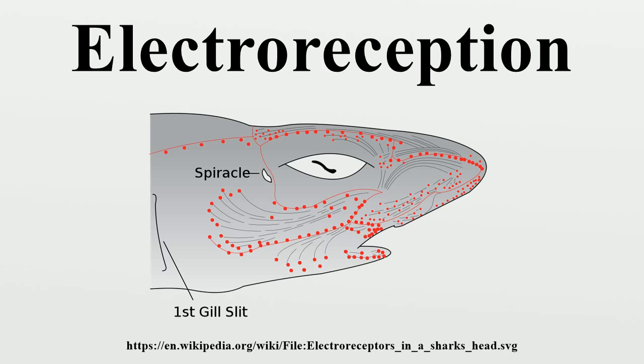In most groups electroreception is passive, where it is used predominantly in predation. A rare terrestrial exception is the western long-beaked echidna, which has about 2,000 electroreceptors on its bill, compared to 40,000 for its semi-aquatic monotreme relative, the duck-billed platypus.